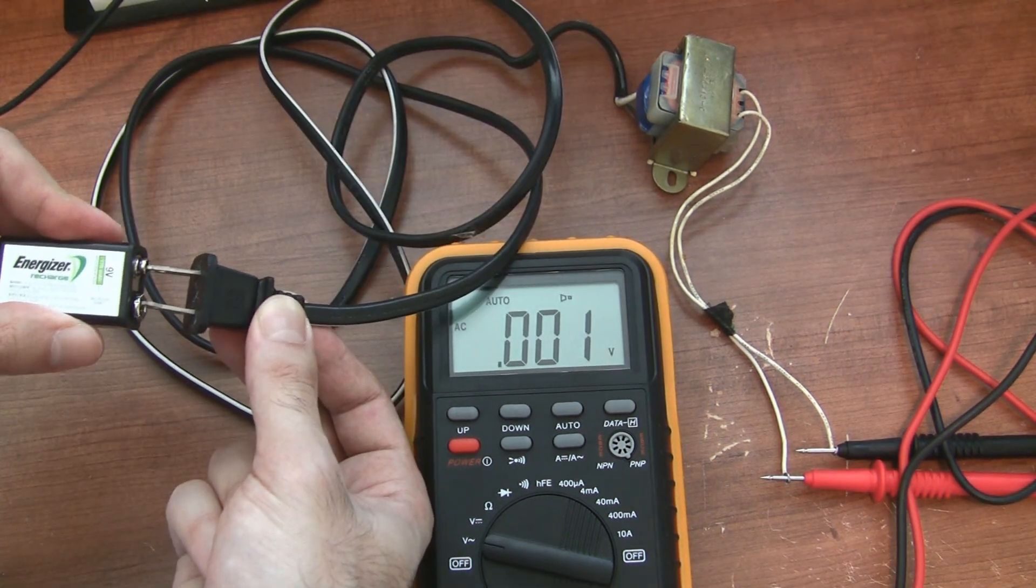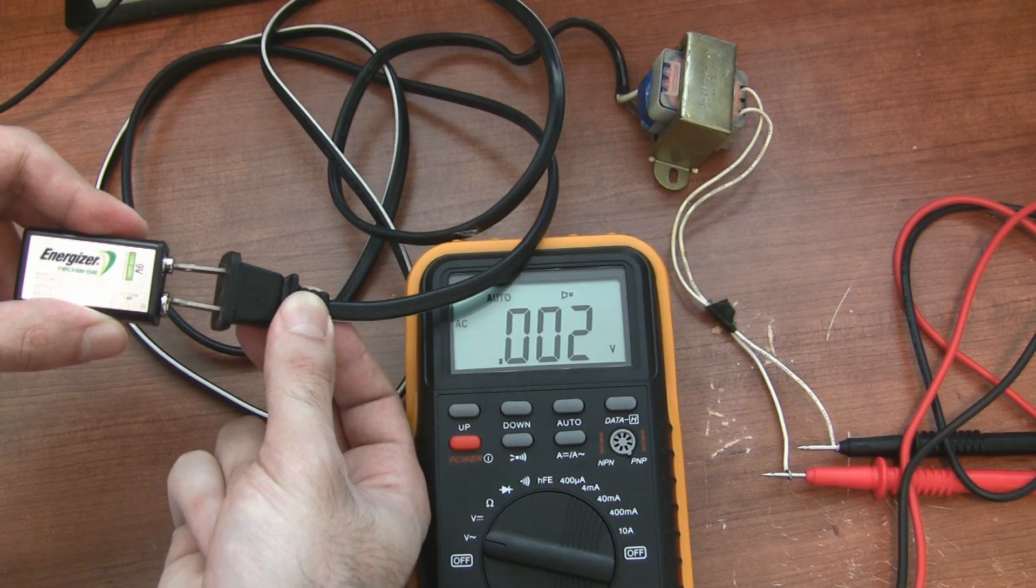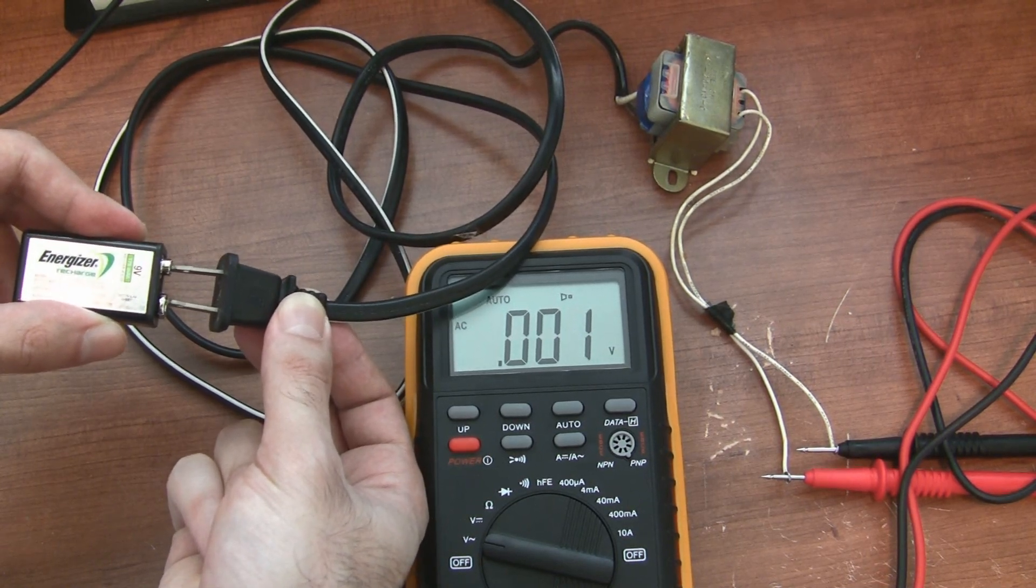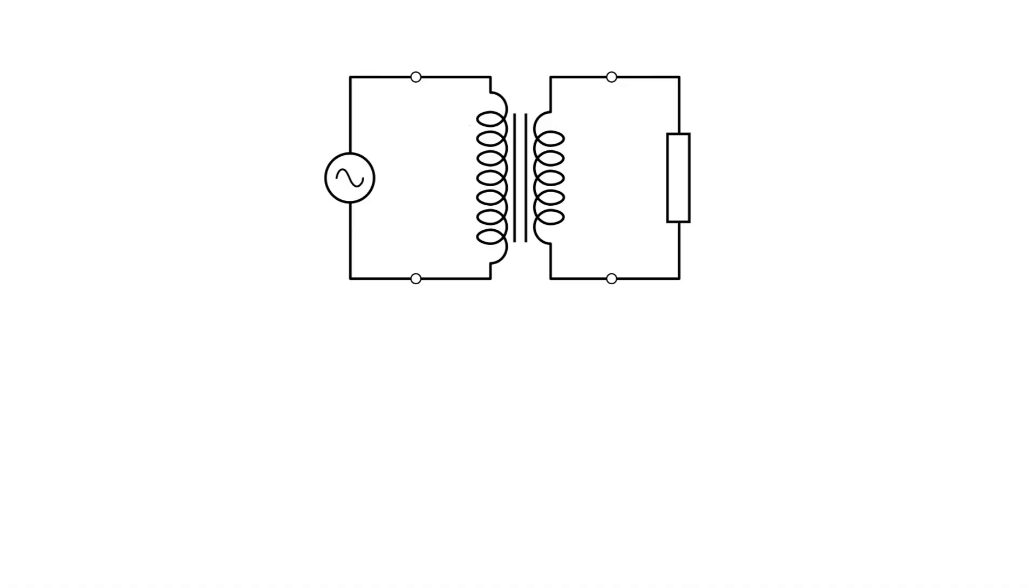But with DC, the magnetic field would stay still, so no current would be induced in the secondary coil, and nothing would happen. Now let's move on to a more conventional circuit diagram.